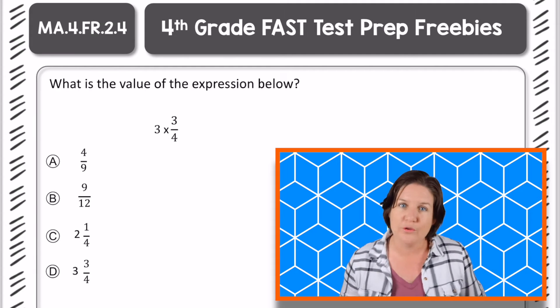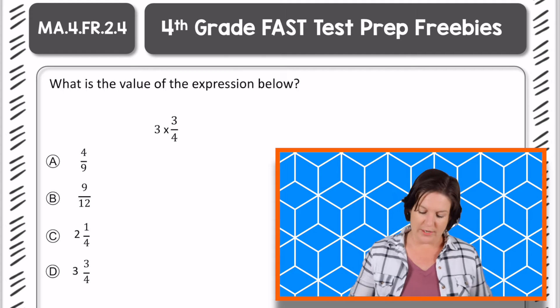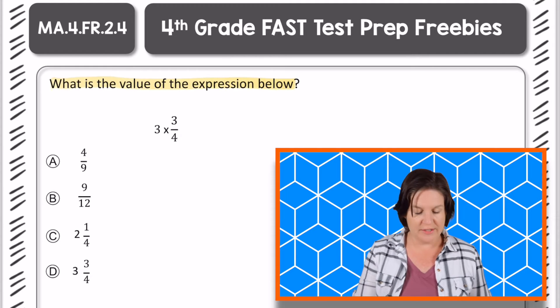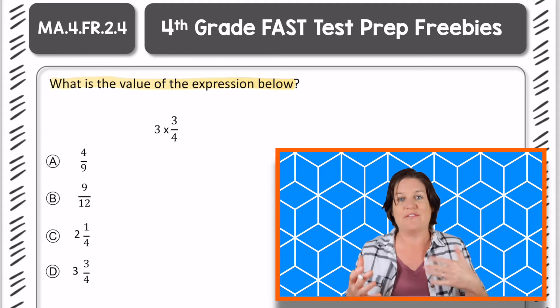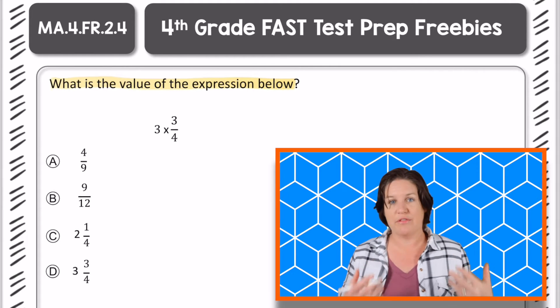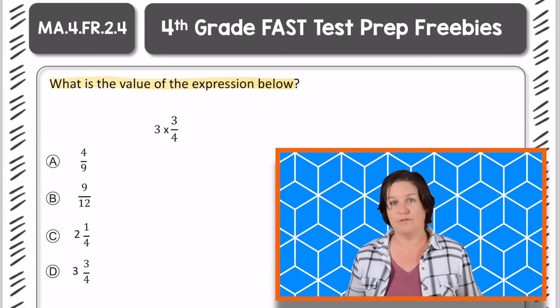Welcome back fourth grade, let's go over this one. All right, this one says what is the value of the expression below? An expression means that we're considering the part that doesn't have an equal sign. So down there we have 3 times 3/4.